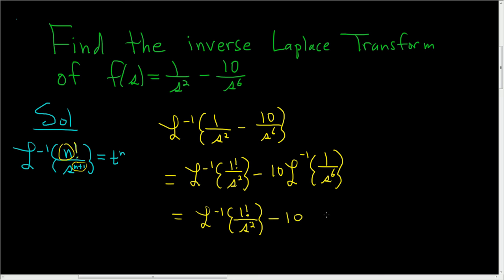Here we have minus 10. I'm going to leave some space here. We also have the inverse Laplace of—here we have 6, so we want 1 less, and it has to be a factorial. So 5 factorial over s to the 6th. And we can't just put a factorial there, we have to divide by it.